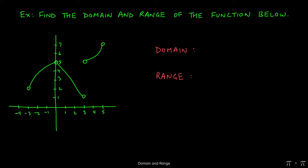Let's find the domain and range of these graphs of functions. Looking at the graph from left to right, we check which values of x have corresponding y values. The function starts at negative 3 but there is no corresponding y value there, so negative 3 will not be in our domain. All y values correspond to x values to the right of negative 3, but we have a stop at zero — the function doesn't have a corresponding y value there either. So our first piece of the domain is from negative 3 to zero, excluding both.